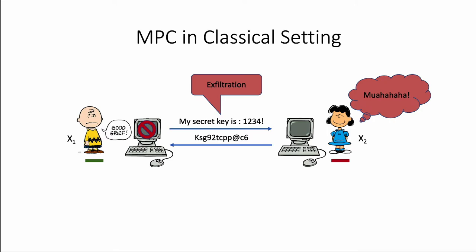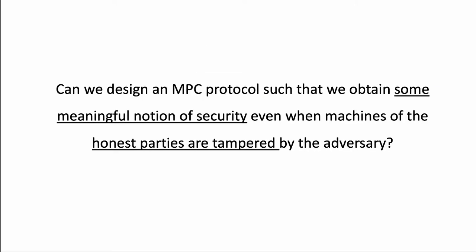This type of leakage is called exfiltration. Note that tampering is different from actual corruptions. When an adversary corrupts a party, it gets full control over it, while in the case of tampering, the adversary tampers the machine in the beginning, and once the machine is owned by Charlie, the adversary cannot arbitrarily control or see the internal state of this machine. So the question we ask in this work is: can we design an MPC protocol that has some meaningful notion of security, even when the machines of the honest parties are tampered by the adversary?